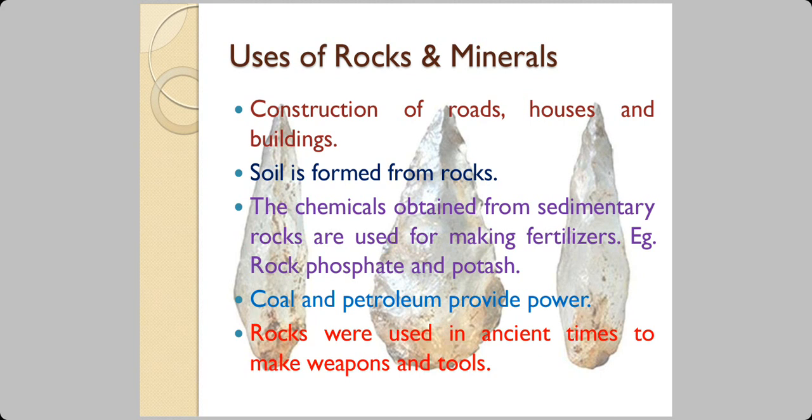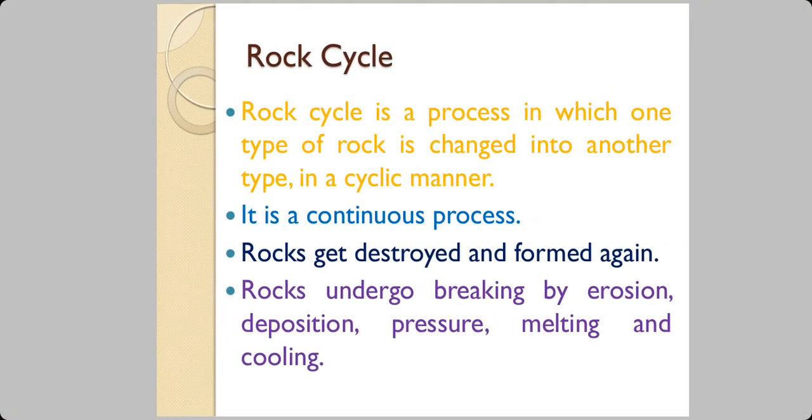Uses of rocks and minerals. They are used for construction mainly whether it is houses, roads or buildings. Soil is formed from rocks because of weathering and erosion. Chemicals obtained from sedimentary rocks are used for making fertilizer. Rock phosphate and potash are the examples of this. Coal and petroleum provide power. Both are a type of mineral and it is extracted from sedimentary rocks. Rocks were used in ancient times to make tools and weapons.